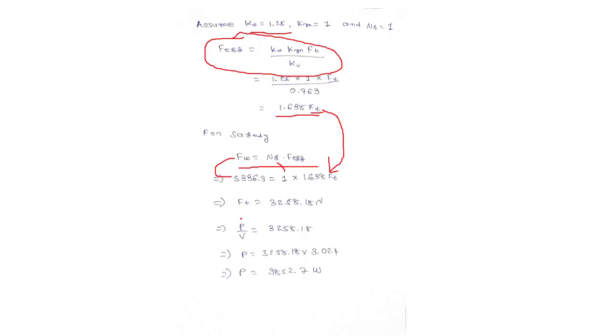From this we can get ft is equal to 3258.18 Newton. Now we know the equation ft is P upon v, and we already derived the value of v is 3.024, so we are getting power 9852.7 watt.